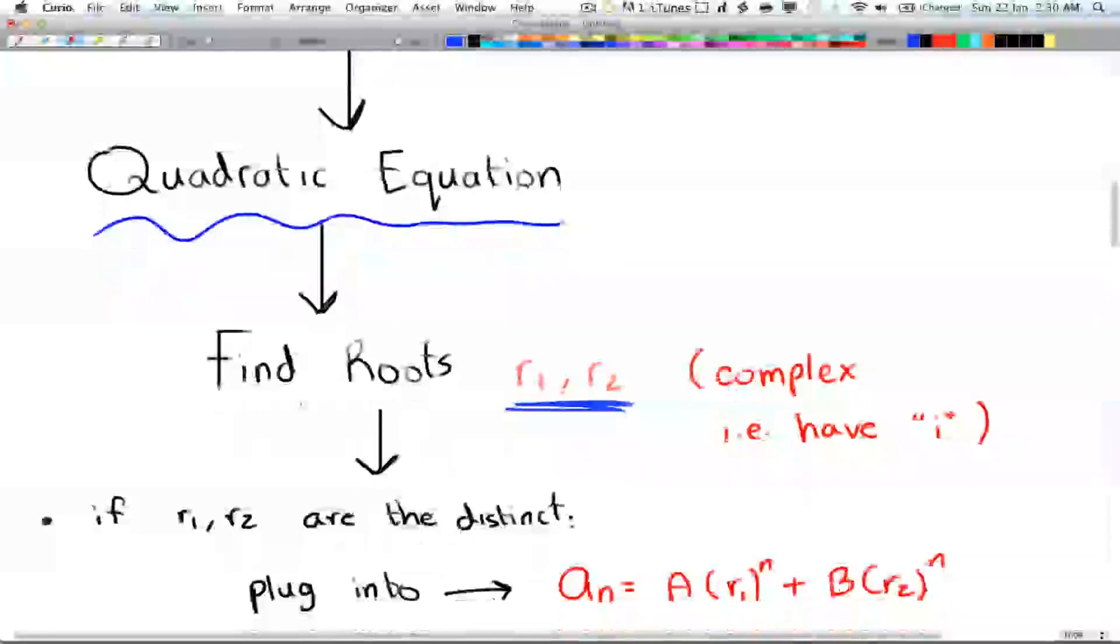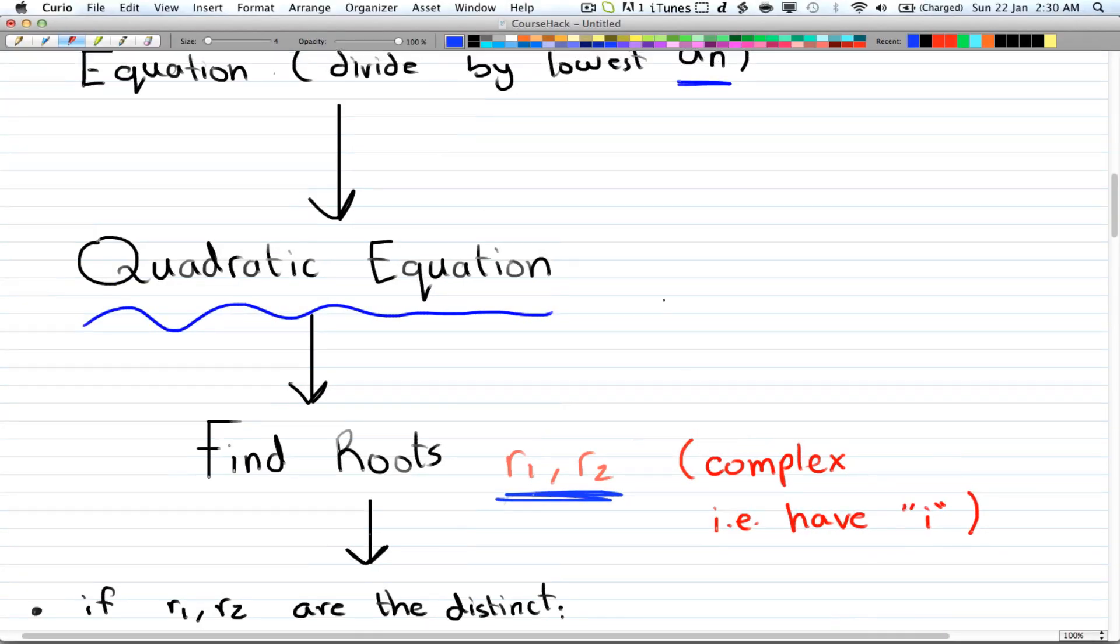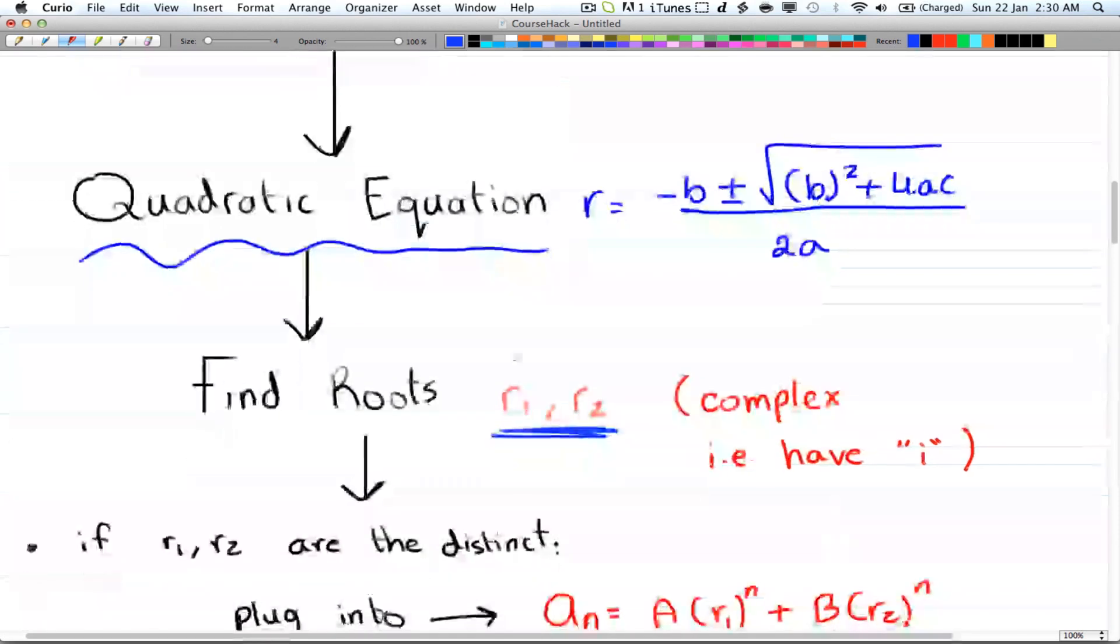From there, you find the roots. And if it's a complex root, then you'll have to use -b ± √(b² + 4ac) divided by 2a. And that will give you your roots.